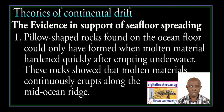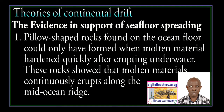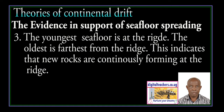Evidences to support sea floor spreading: Pearl-shaped rocks found on the ocean floor could only have formed when molten material hardened quickly after erupting underwater. This showed that molten material continuously erupts along the mid-ocean ridge. The magnetic polarity of the sea floor changes — the center of the ridge is of normal polarity. Stripes of normal and reverse polarity are formed symmetrically on both sides of the ridge. The youngest sea floor is at the ridge; the oldest is farthest from the ridge, indicating that new rocks are continuously forming at the ridge.